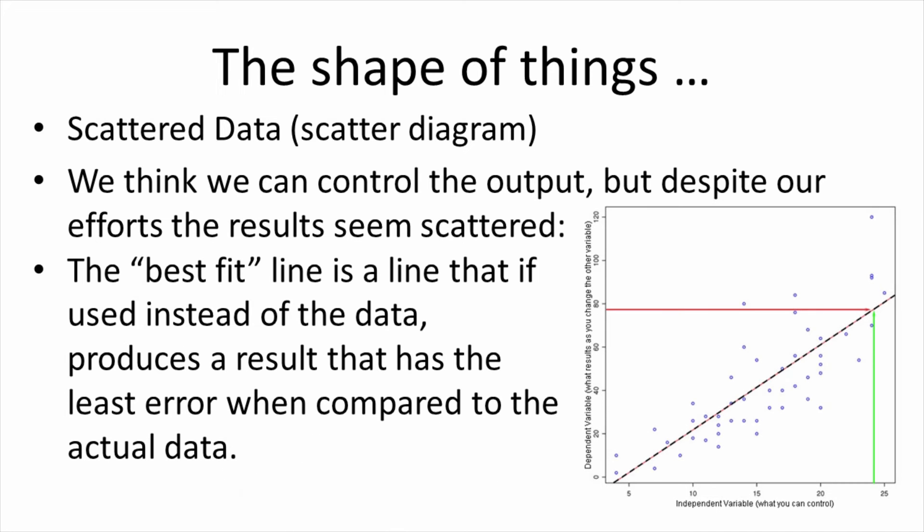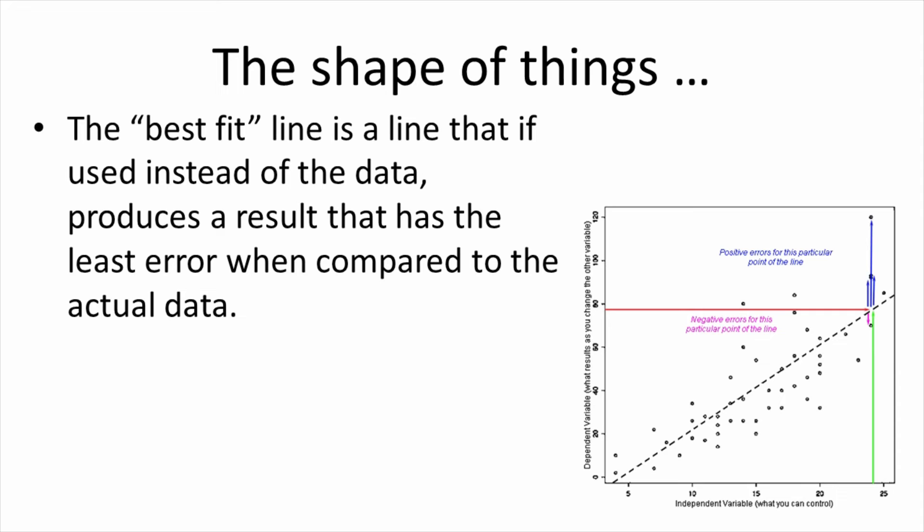Now suppose we use a single line to approximate this set of data. We draw this line right through the middle of the scatter of data points. Let's say we use this proposed line to represent our situation instead of the data. Then we are predicting that if we take a point on the independent variable and go up to our line and then look across to the dependent variable, we are predicting that will be the result. We see that there is an error between what our line predicts versus our actual data. Suppose we were to move the line about so as to minimize the error between each data point and our proposed line. When we find the line that minimizes all the errors, we might call this the best-fit line.